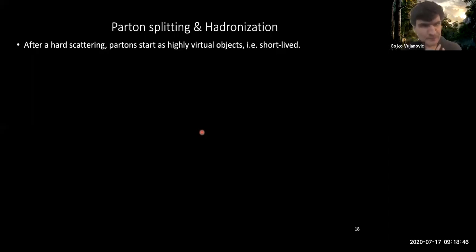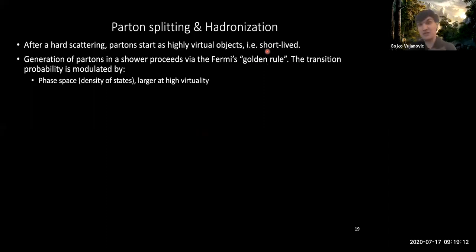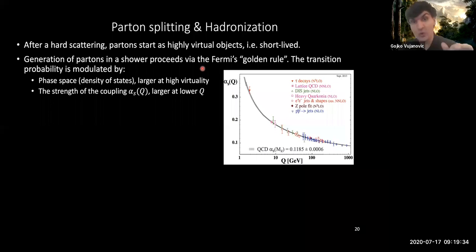So once you've created these partons, how do they shower? After the hard scattering, you end up creating highly virtual and highly energetic objects. Because they are highly virtual, because of the Heisenberg uncertainty principle, delta E delta t, the delta E is this virtuality and delta t, so if your delta E is very large, delta t has to be small. So these guys are actually very short-lived. Because they are short-lived, they will decay, and this decay is going to happen according to Fermi's golden rule. You have essentially a competition between phase space—the higher your virtuality or higher your energy, the more you open up the phase space—however, the lower you go in virtuality, the stronger your coupling constant becomes. So then you have a competition between a larger phase space and coupling constants between transitions. These two things are essentially going to be competing against one another.